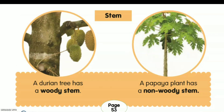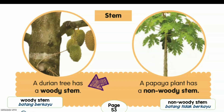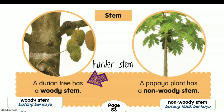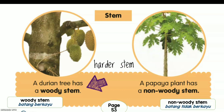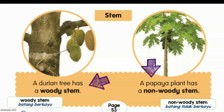Stem. A durian tree has a woody stem — pokok durian ialah jenis batang berkayu. Woody stem means the stem is harder than the non-woody stem.